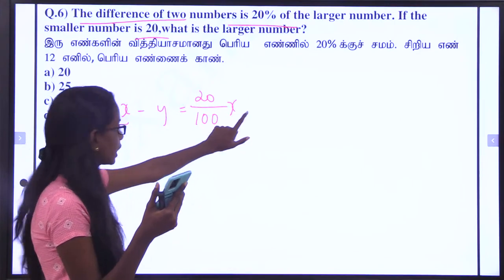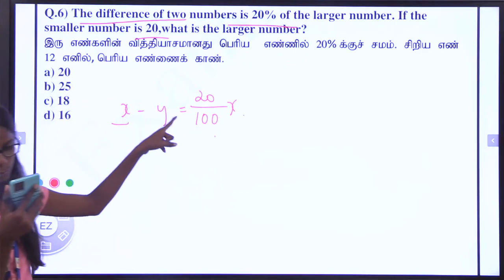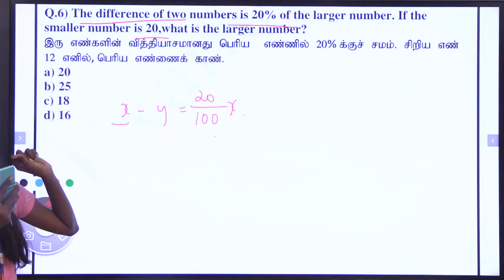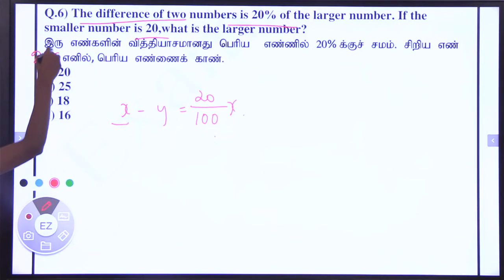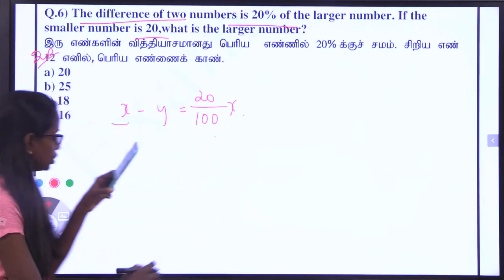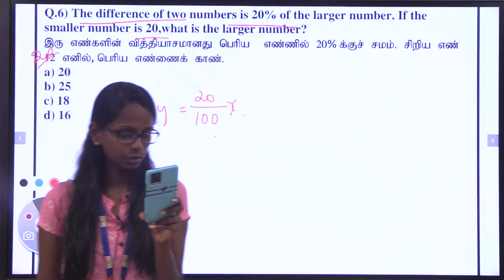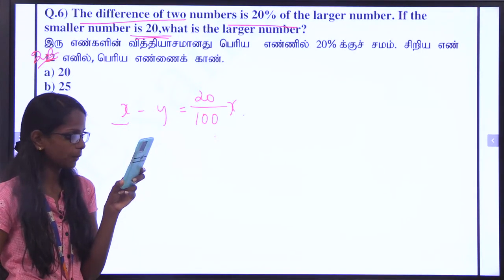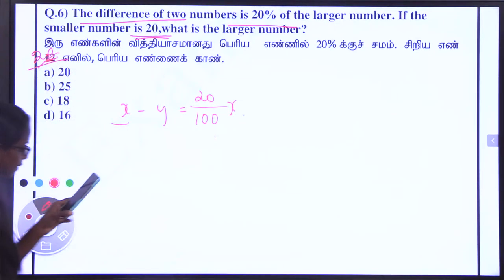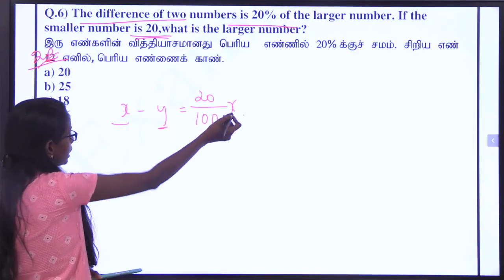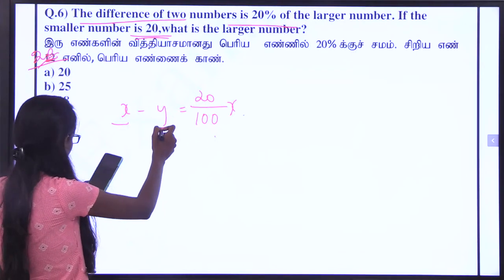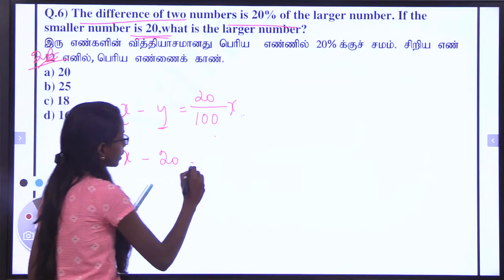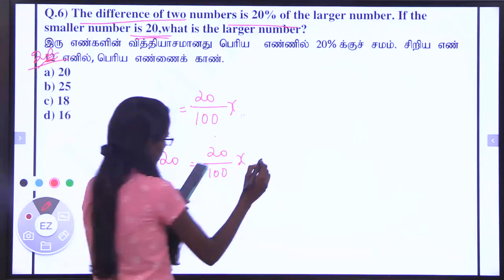20% of the larger number — if you assume the larger number is x. X is the larger number, y is the smaller number. The smaller number is 20, so y equals 20. The equation is: x minus y equals 20 divided by 100 into x. So 20 divided by 100 into x. That is the same step, RK.